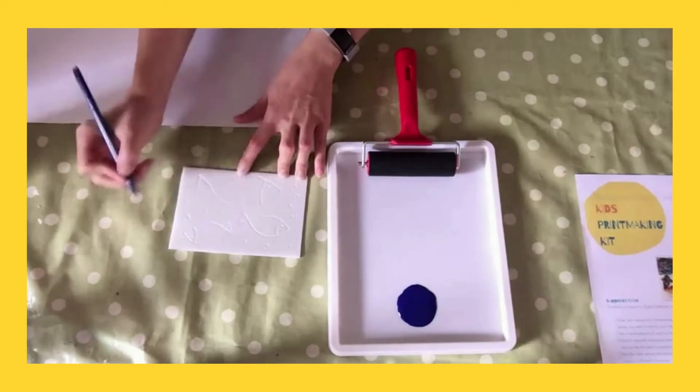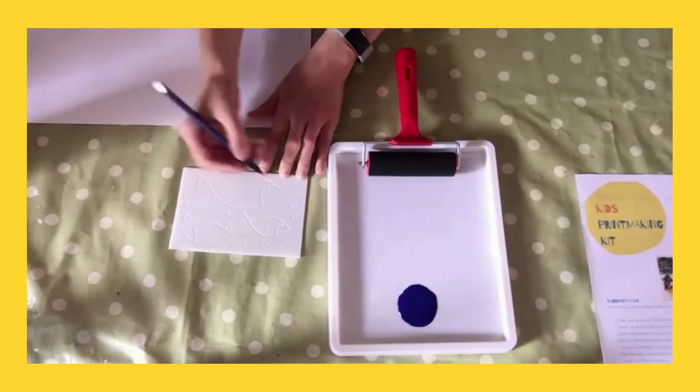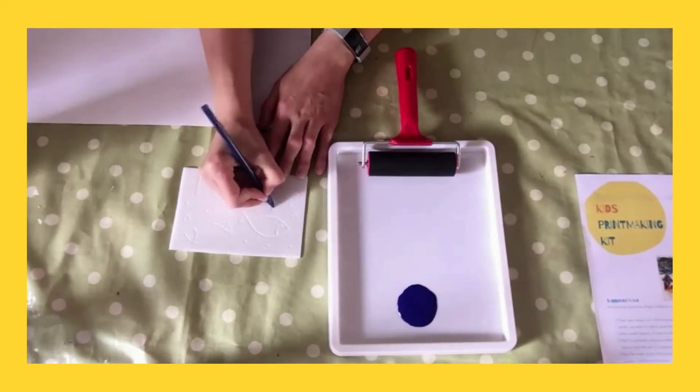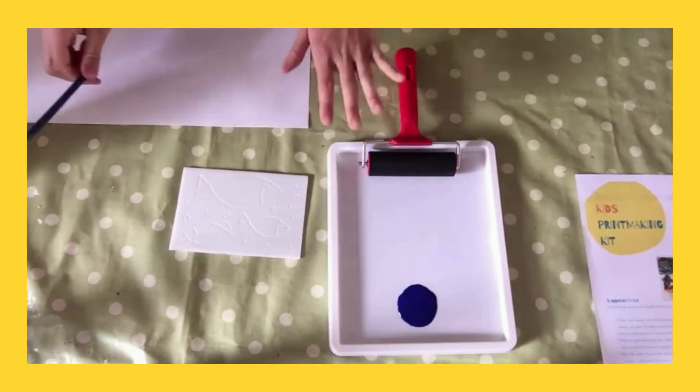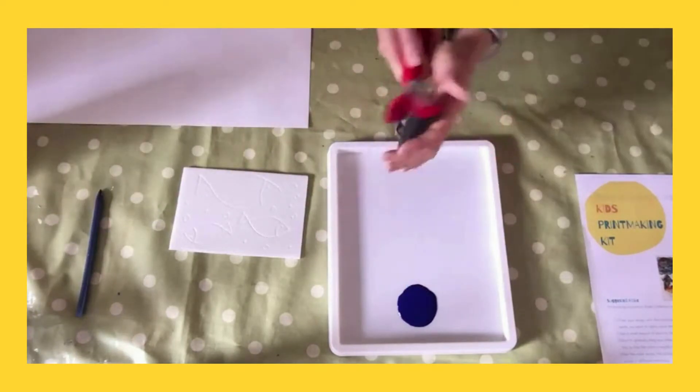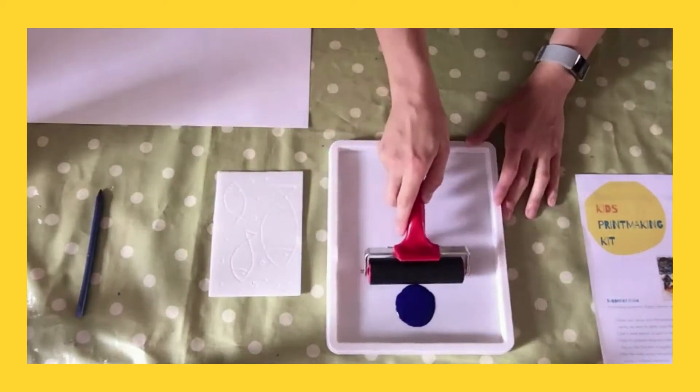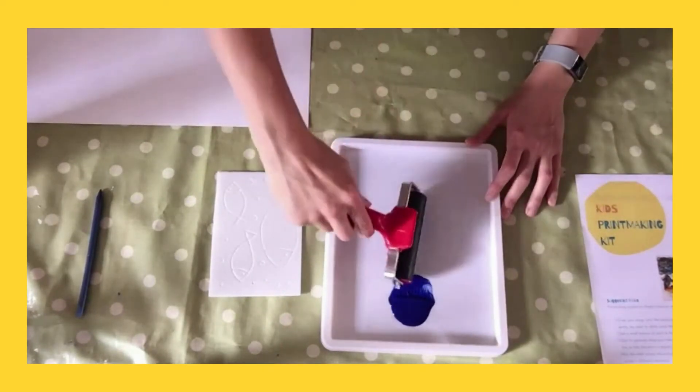So once you're happy with your design, you want to pick a colour of paint, add it to your paint tray, not very much, a small amount, about the size of a 2p coin. And then take your roller and you want to start to what we call inking up your roller.